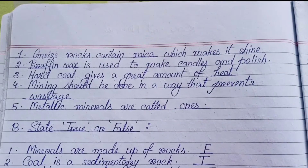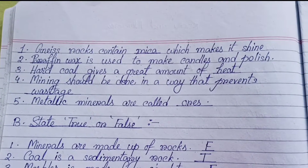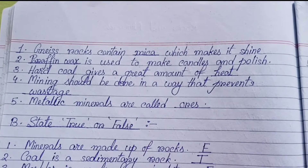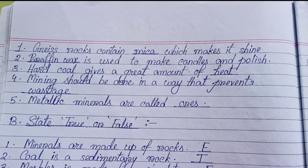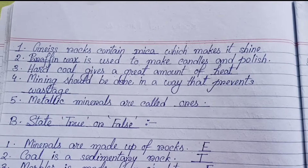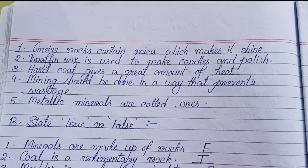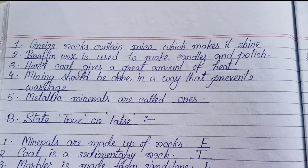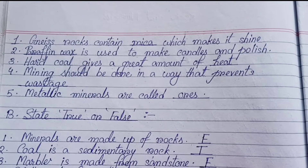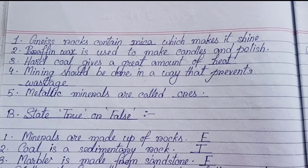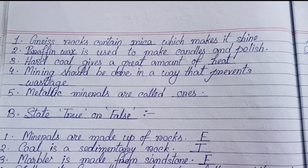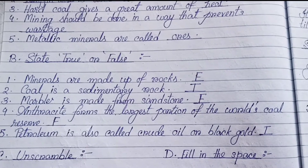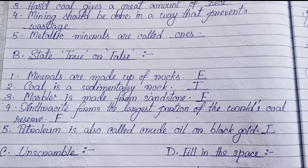Fill in the blanks: (1) Gneiss rocks contain mica which makes it shine. (2) Paraffin wax is used to make candles and polish. (3) Hard coal gives a great amount of heat. (4) Mining should be done in a way that prevents wastage. (5) Metallic minerals are called ores.